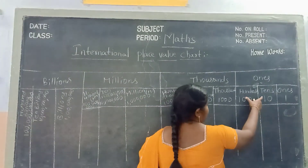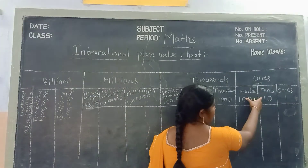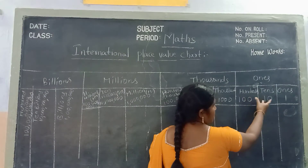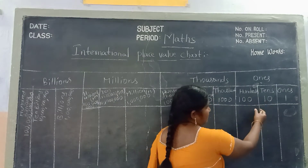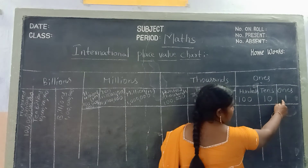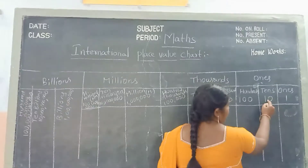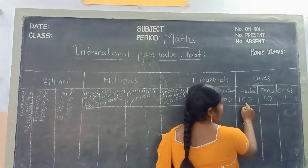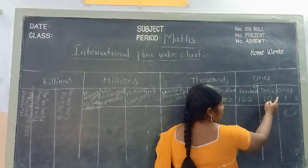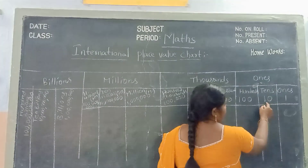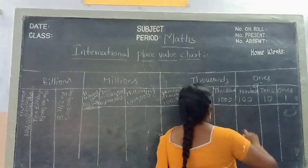See children, that one is the ones period. In the ones period we have 3 places: 1, 10, 100.